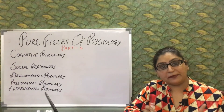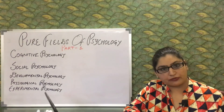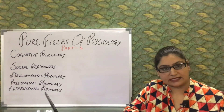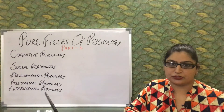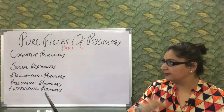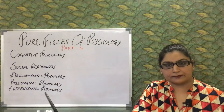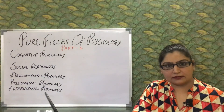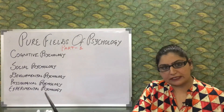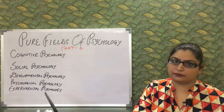In a nutshell, experimental psychology tries to study behavior and mental processes by means of scientific investigation, mainly in a laboratory under controlled conditions. Today we discussed these five fields of pure psychology — this is part one. The remaining branches of pure psychology will be covered in the next video.